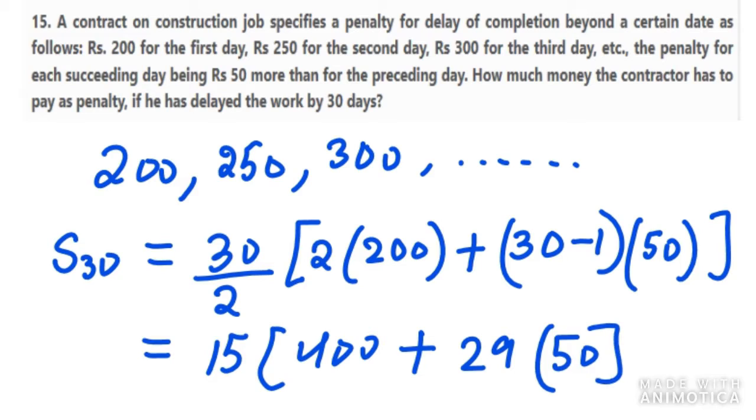When you solve this, you will get your answer as 27,750. So that means the contractor has to pay, if he has delayed by 30 days, then he has to pay 27,750 rupees.